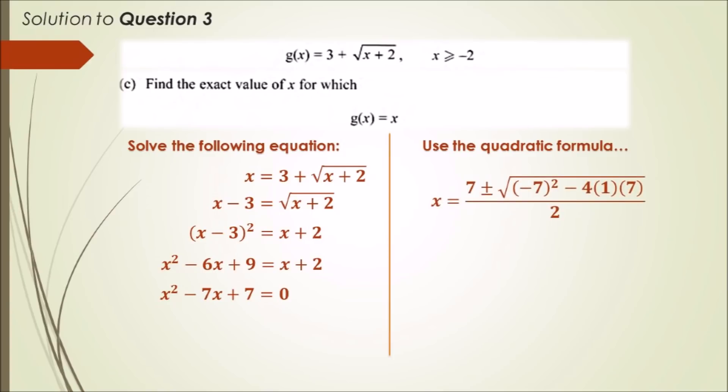Plug in all the figures and you should get x equals 7 plus or minus root 21 all over 2. Now, since x must be greater than or equal to 3, which satisfies the inverse property, we therefore get x equals 7 plus root 21 over 2. If we chose a negative value, it would be less than 3, so that would not be the valid solution that would satisfy the function itself.